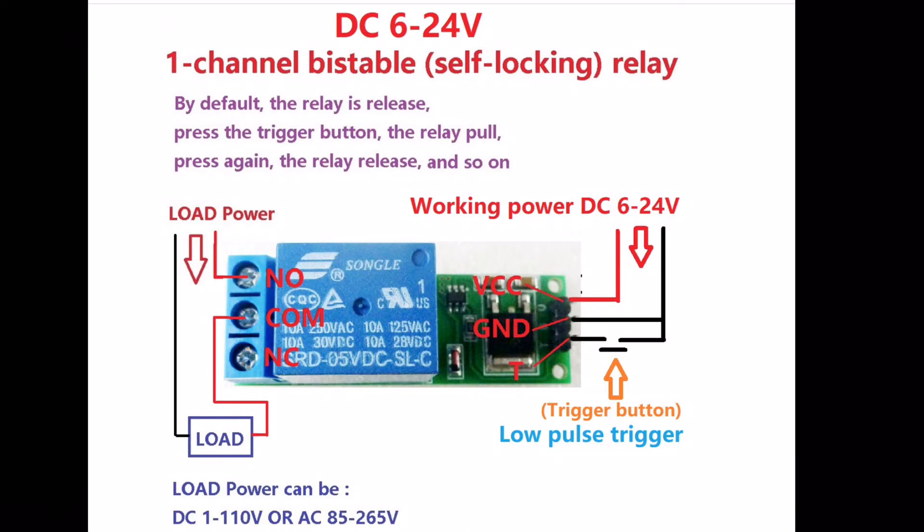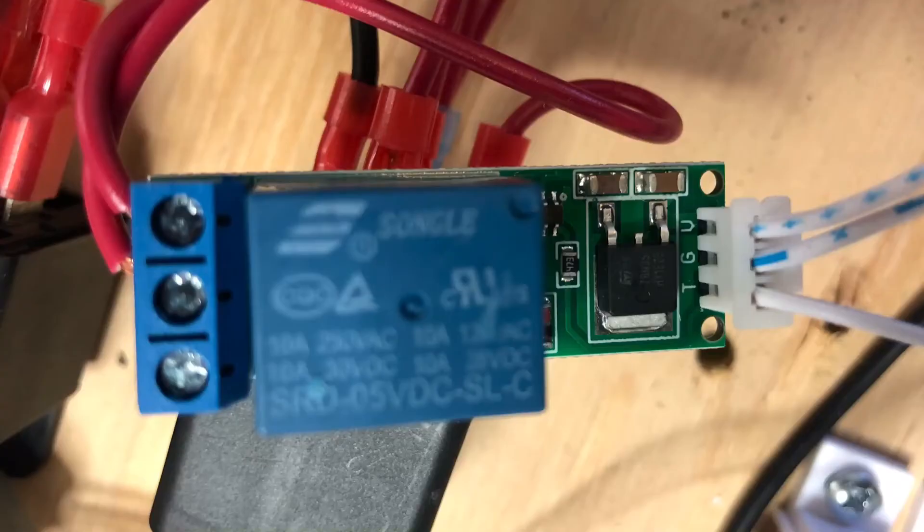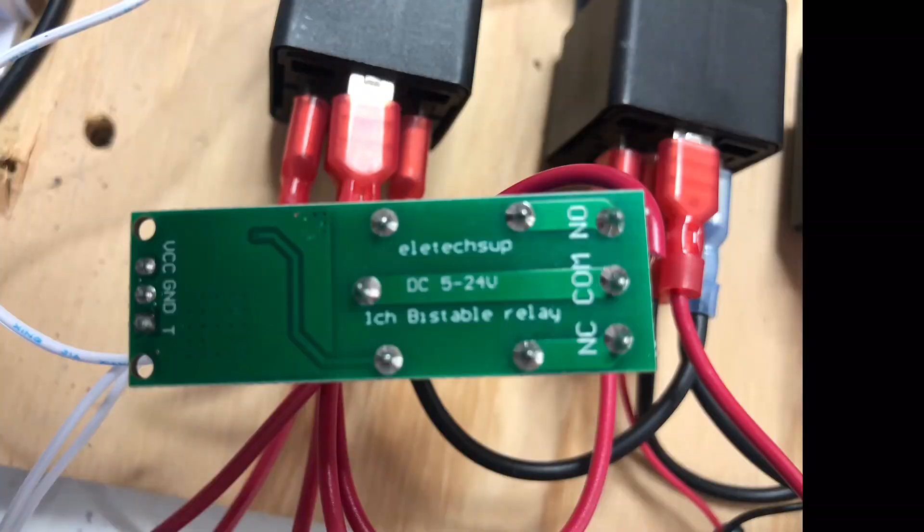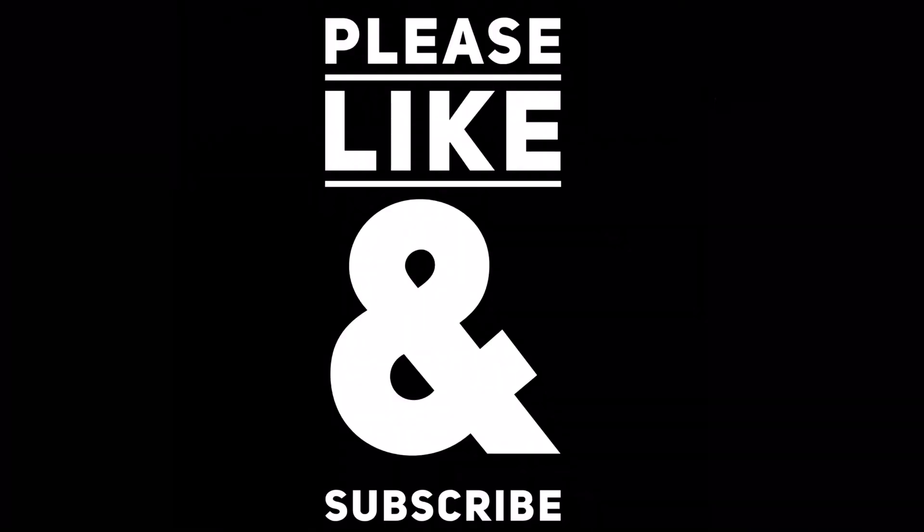So this is just an up close of the actual relay. You can see your T, G, and V, and then your normally closed, common, and normally open. So there's probably a better way to do this. This is what I came up with with what I had on hand. It works. If you know of a better way let's post it so we can all keep learning. Thanks for watching.